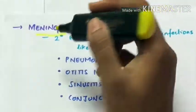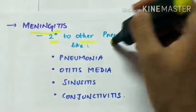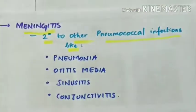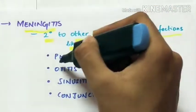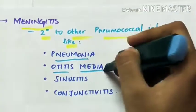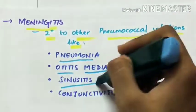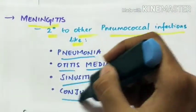Meningitis can occur secondary to other pneumococcal infections like pneumonia, otitis media infection of the middle ear, sinusitis, and conjunctivitis.